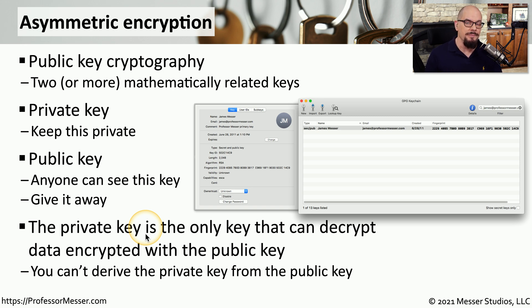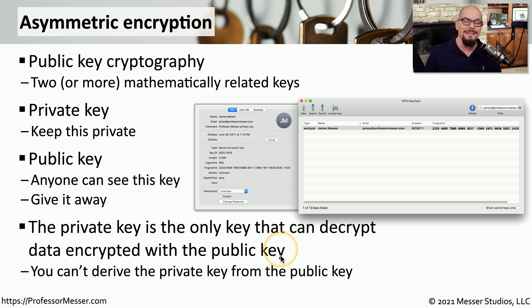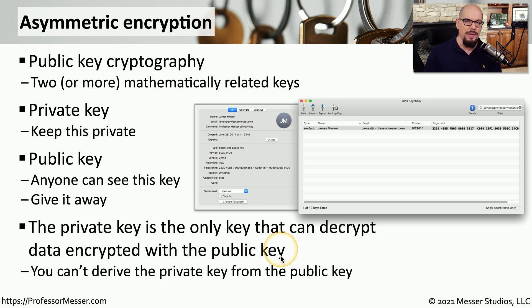Interestingly, you can also do this the opposite way — you can encrypt information with your private key, and the only people able to decrypt it are those who have the public key. This is the process used for something like a digital signature, for example. Although we've named these keys public and private, they're really only named that way because of how we're using them. The two keys are mathematically related, and even though everyone has access to the public key, they still cannot derive what the private key should be.